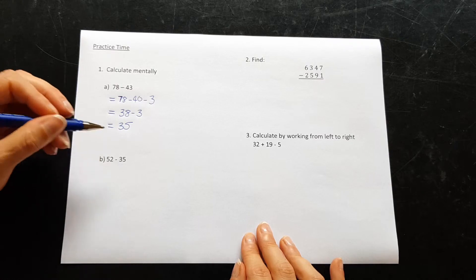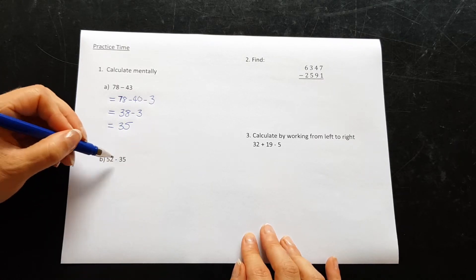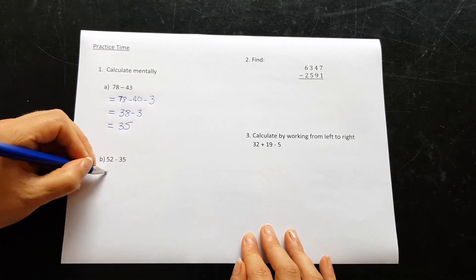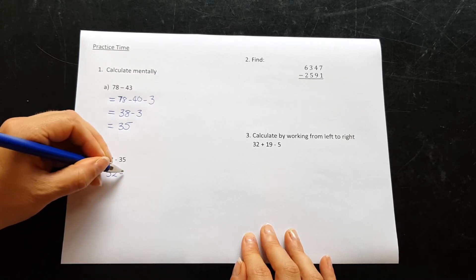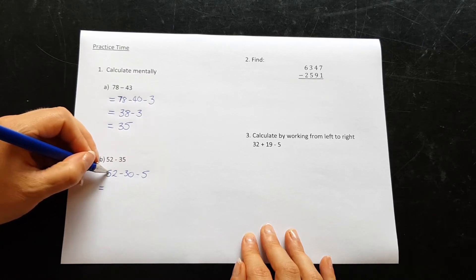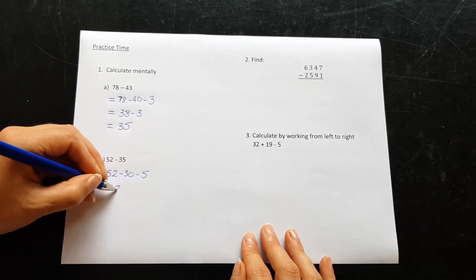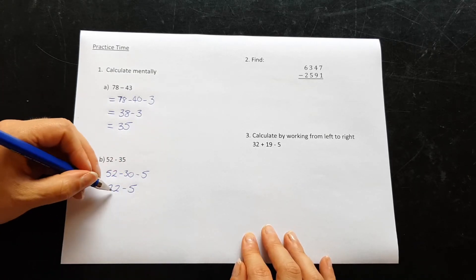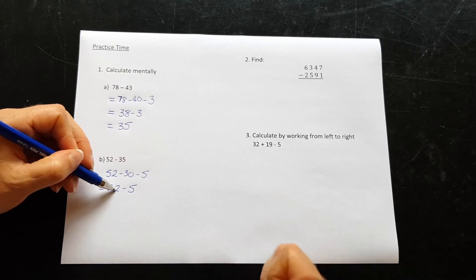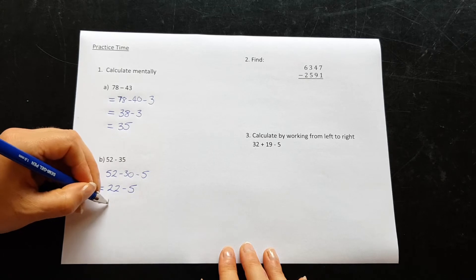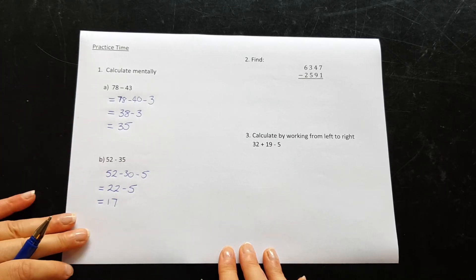And B, a little bit trickier because we have a bigger 5 here that we have to subtract. So let's take 52, take away the 30, take away the 5. If we take away 30 from here, that's going to take us to 22. And take away another 5, counting backwards 5 from 22 gives us 17. And that's the answer.